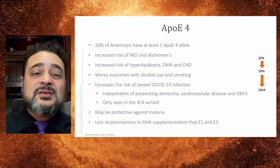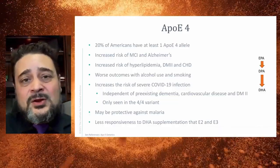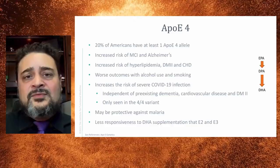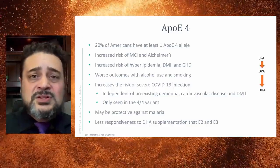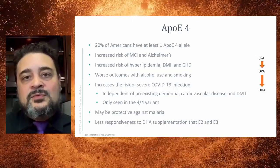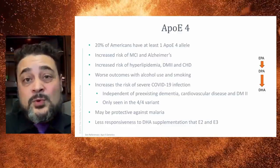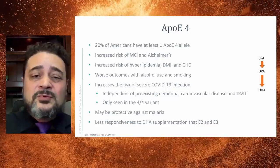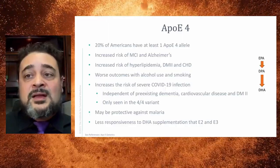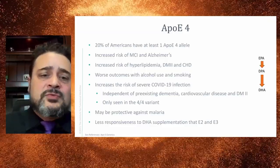What about APOE4? Twenty percent of Americans have at least one APOE4 allele. If you have APOE4, you have an increased risk of mild cognitive impairment and Alzheimer's, increased risk of hyperlipidemia, diabetes, and coronary heart disease. If you smoke or drink, you have a worse outcome with this genotype. Interestingly, it also increases the risk of severe COVID-19 infections—specifically APOE4/4 showed a greater chance of severe COVID. With patients whose genetics you already have, this is a nice way to risk-stratify them even further when it comes to COVID and try to protect them.